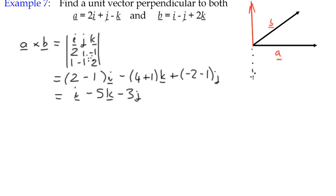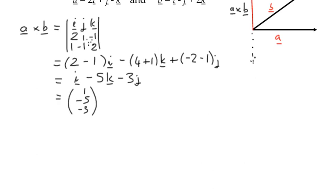So that's our vector product, or in other words, we could say that the vector is 1, negative 5, and negative 3. So we've calculated a vector, A cross B, and it has a certain amount of magnitude. So if the magnitude of this vector, for instance, was 5, then our unit vector would have to be a fifth of the value of that unit vector. So we need to calculate the magnitude and then effectively divide the vector by that magnitude.